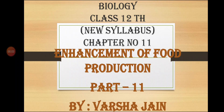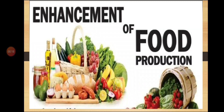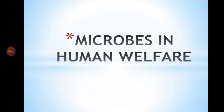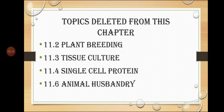Hello students. Today we are continuing with biology class 12th new syllabus, chapter number 11: Enhancement of Food Production. This is the 11th lecture of this chapter. The topics deleted for this academic year are 11.2 Plant Breeding, 11.3 Tissue Culture, 11.4 Single Cell Protein, and 11.6 Animal Husbandry.